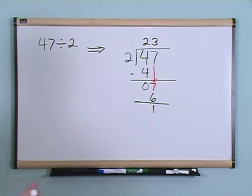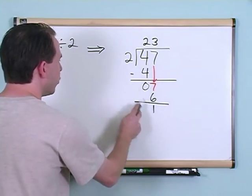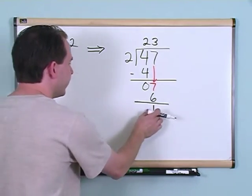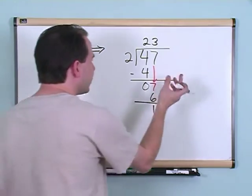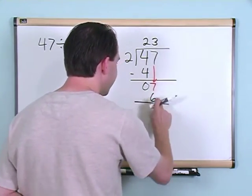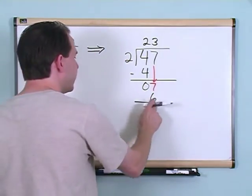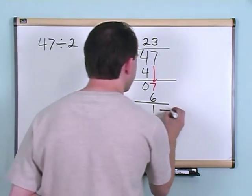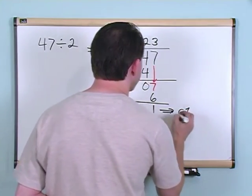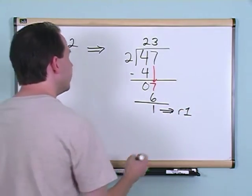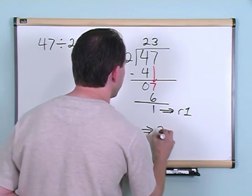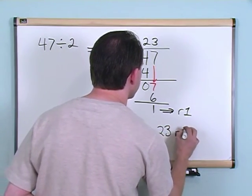And then the final thing you do is you say can you divide 2 into 1? The answer is no because this is too small, it's smaller than the number you're dividing by. And on top of that, there's no more digits to bring down here to help you out to make that number any bigger. So you say you have a remainder of 1, just like we had in the other problems. So the answer to this problem is going to be 23 remainder of 1.